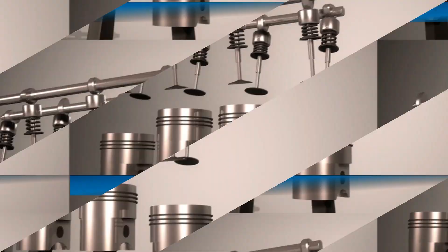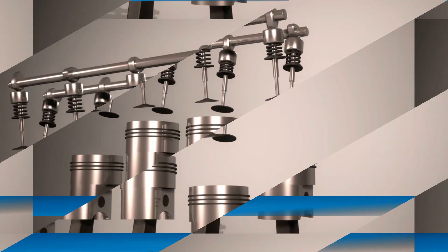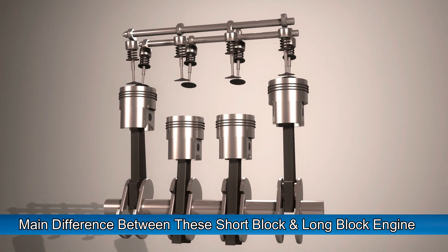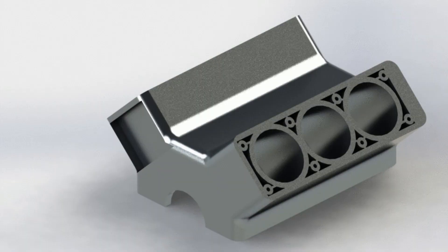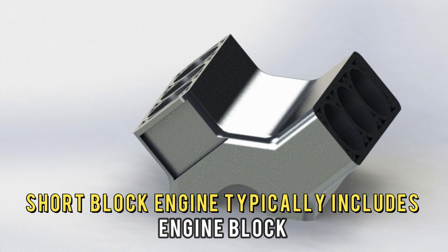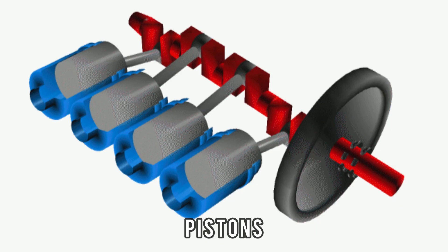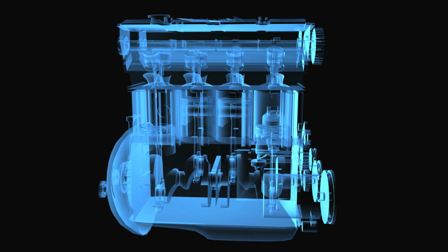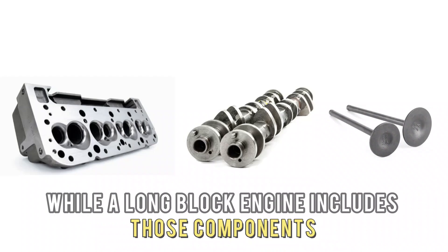The main difference between short block and long block engines is the level of completeness. A short block engine typically only includes the engine block, crankshaft, connecting rods, and pistons. While a long block engine includes those components as well as cylinder heads, camshafts, valves, and other features.